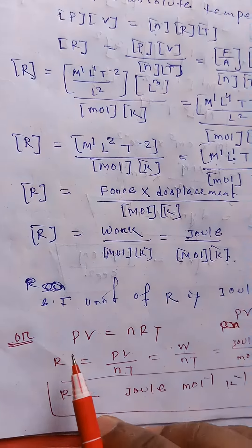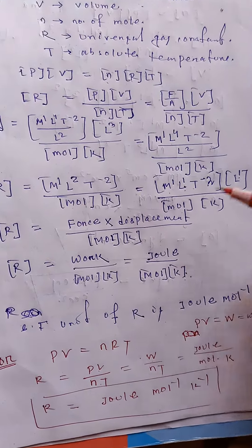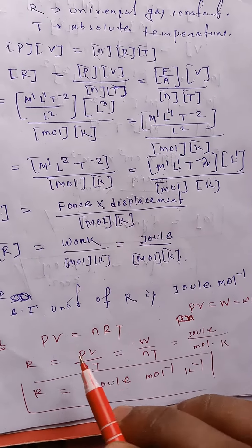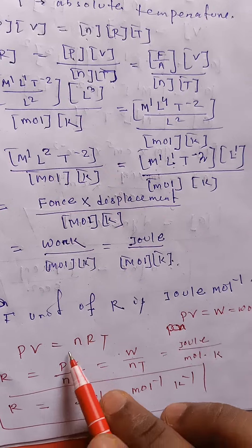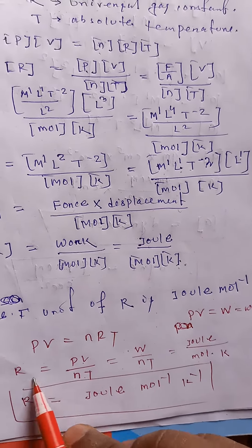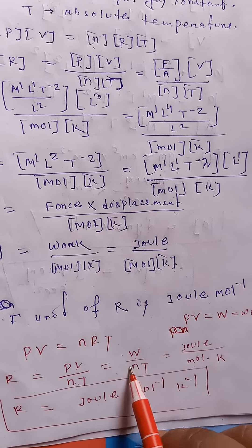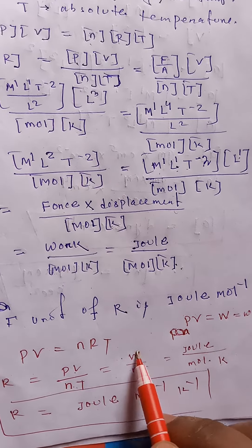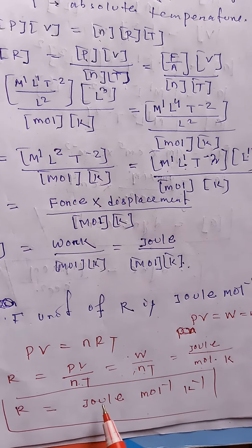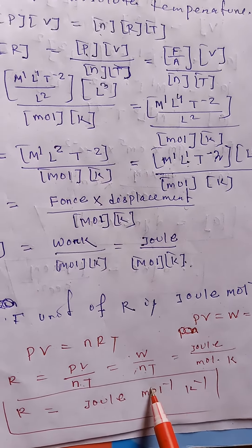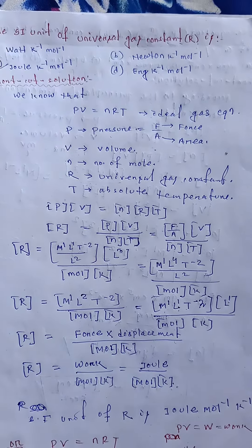There is also a very short shortcut method. Since PV = nRT and PV represents work done, we have R = PV / nT = work / (n × T). Therefore the SI unit of R is joule, n is mole, and T is kelvin — giving R the unit joule mole inverse kelvin inverse. So option C is correct.